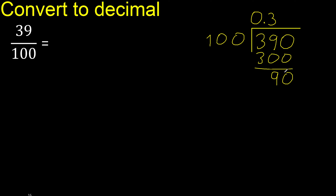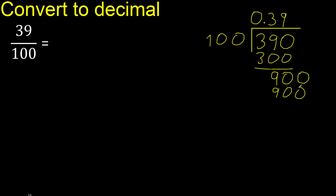Subtract: 90. There is no number that goes down, therefore complete — always complete with 0. Point is here. 100 multiply by which number — multiply by 9 is exact: 900. Is not greater. Ok, subtract: 0. 0. Therefore finish.